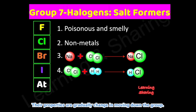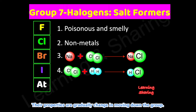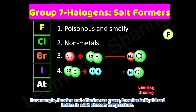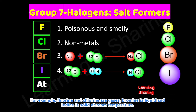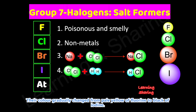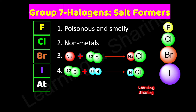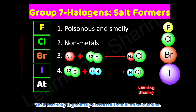Their properties gradually change moving down the group. For example, fluorine and chlorine are gases, bromine is liquid, and iodine is solid at room temperature. Their color gradually changes from pale yellow of fluorine to black of iodine. Their reactivity gradually decreases from fluorine to iodine.